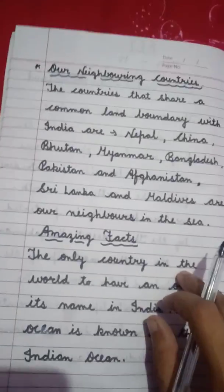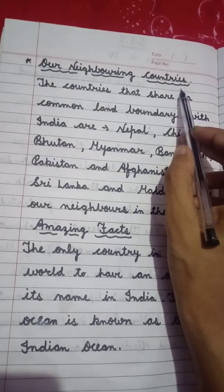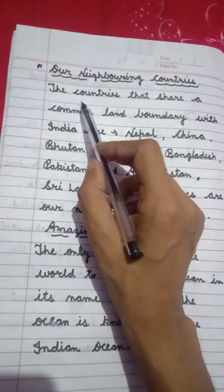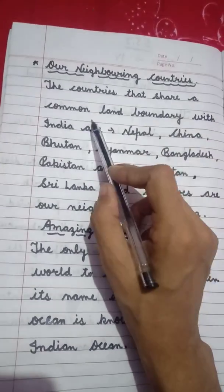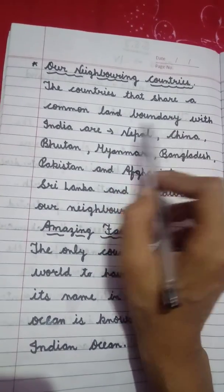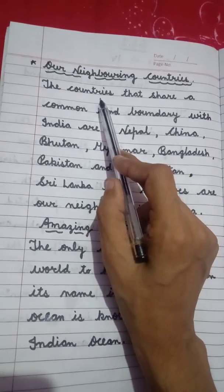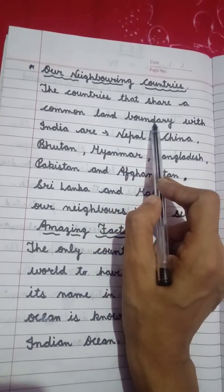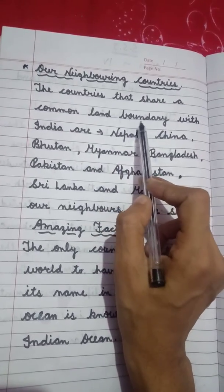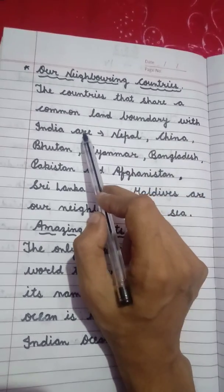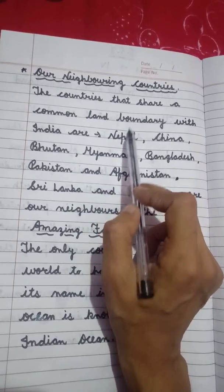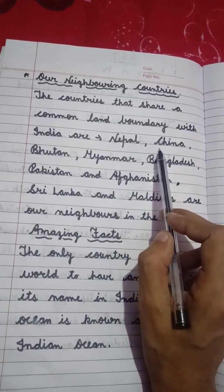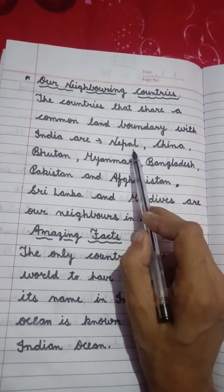Next topic है — Our Neighbouring Countries। means कि हमारे पड़ोसी देश। The countries that share a common land boundary with India — यानी जो देश India के साथ अपनी land की सिमाओं को share करते हैं, उन देशों के नाम कौन से हैं? वो हमारे neighbouring countries हैं। पहला — Nepal।